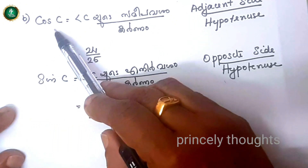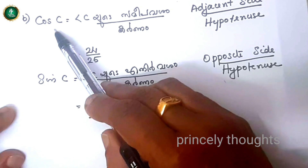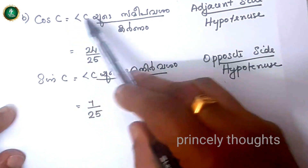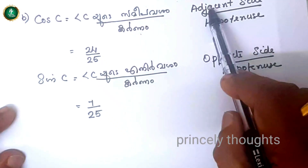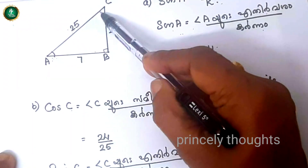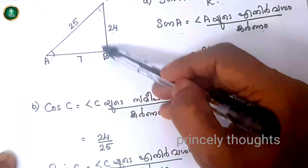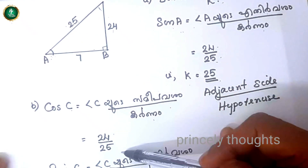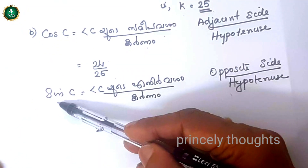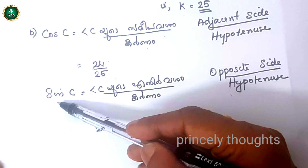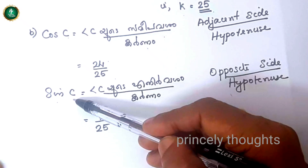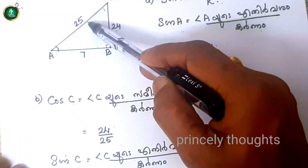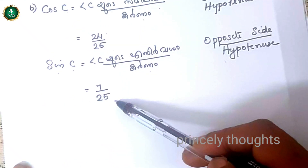For cos C and sin C: cos C is adjacent side by hypotenuse. The adjacent side to angle C is BC, which is 24, and hypotenuse is 25. So cos C equals 24 by 25. Sin C is opposite side by hypotenuse — the opposite side to C is AB, which is 7, so sin C equals 7 by 25.